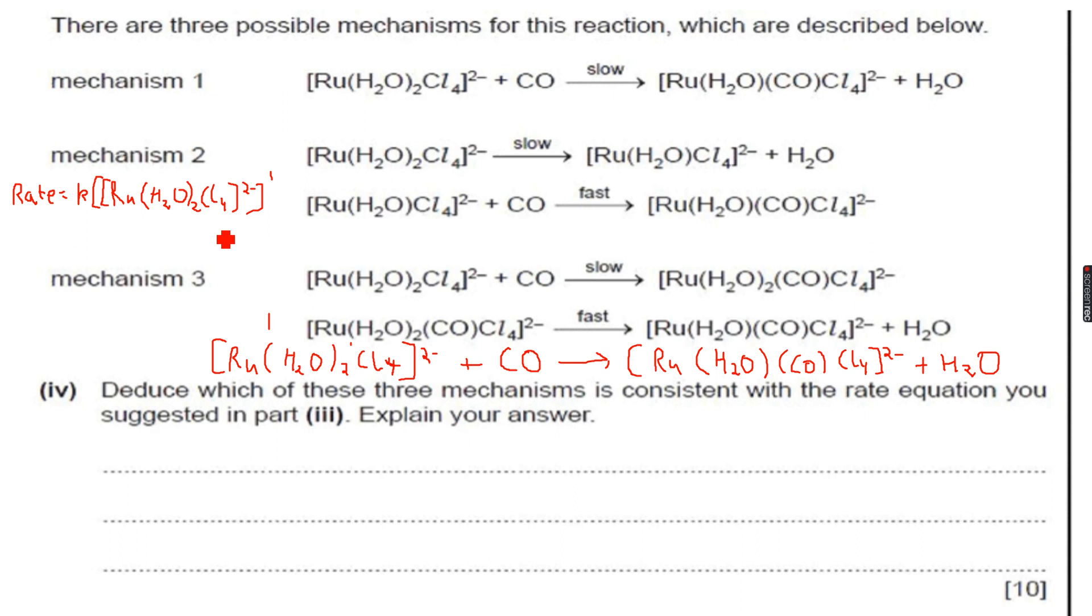We are given that this is the rate equation, and we know that the slowest step will only contain this ion. In mechanism 1, there is only one step, and it contains both, so this is wrong, because the slowest step cannot contain carbon monoxide, since carbon monoxide is not there in the rate equation.